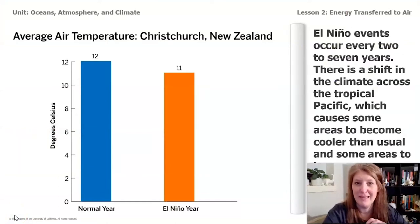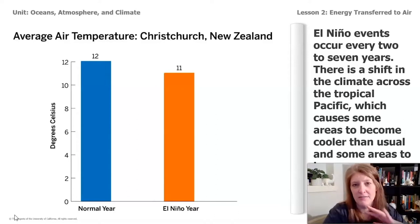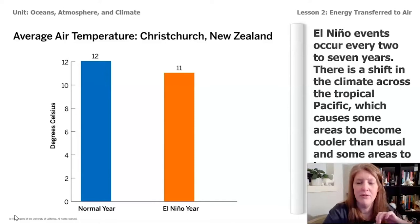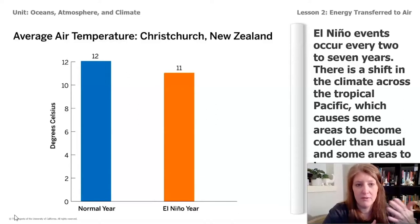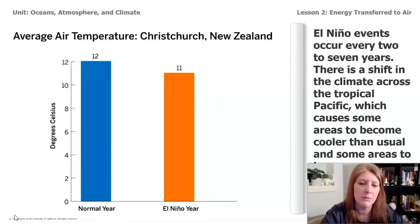Let's get started by looking at some data. As you'll remember from lesson one, the question we're trying to understand is: how come the air temperature in Christchurch, New Zealand is colder during El Niño years? The farmers there really want to know why this is happening so they can prepare for it. So let's start by getting a little bit of data from the farmers themselves.